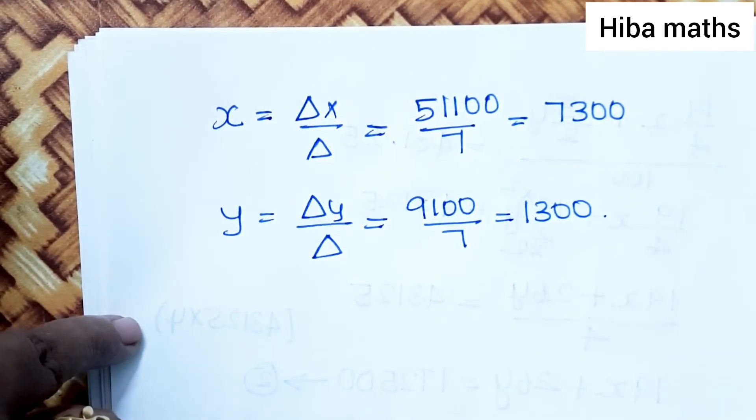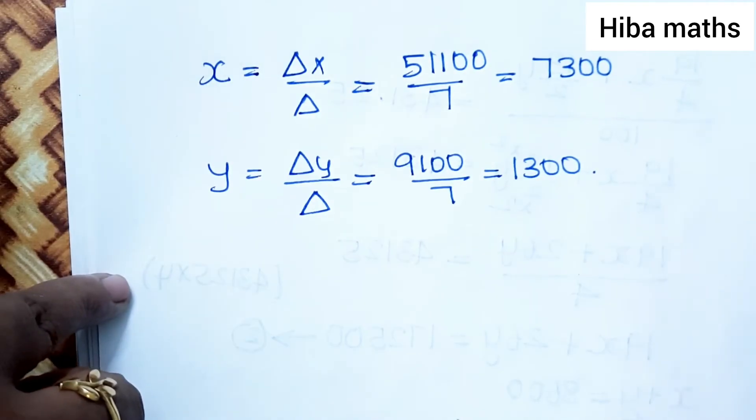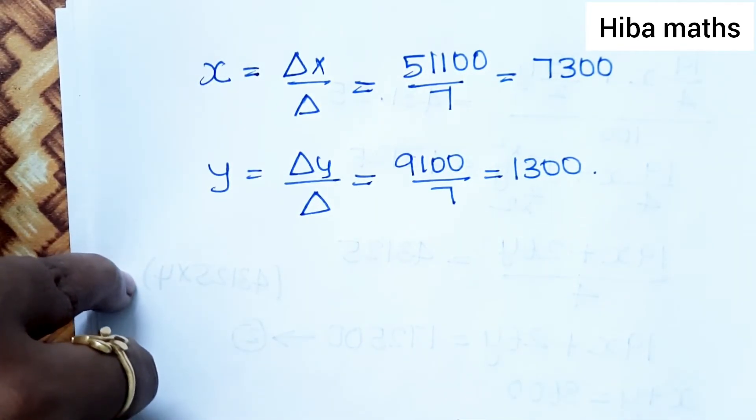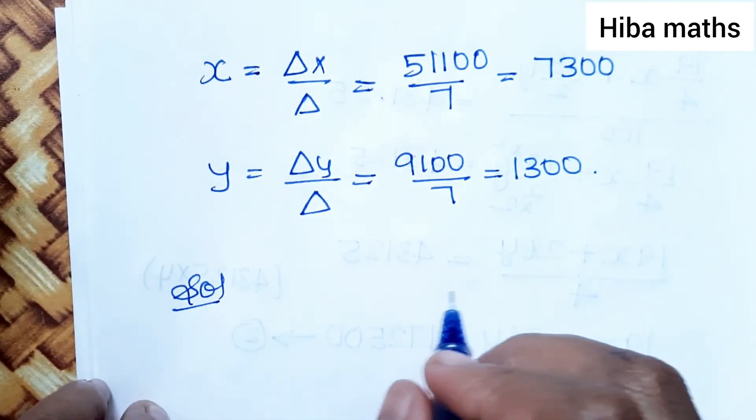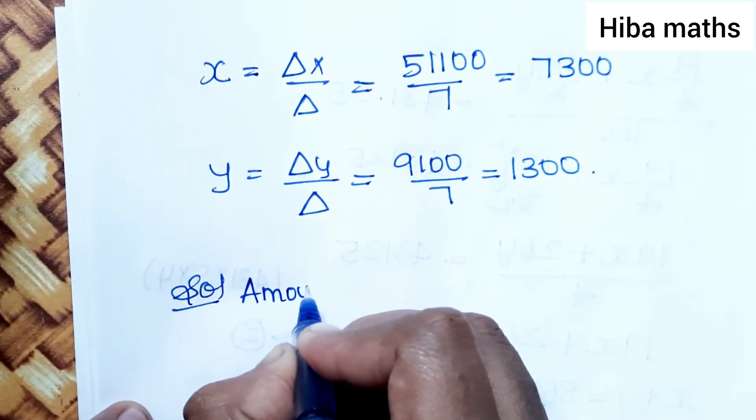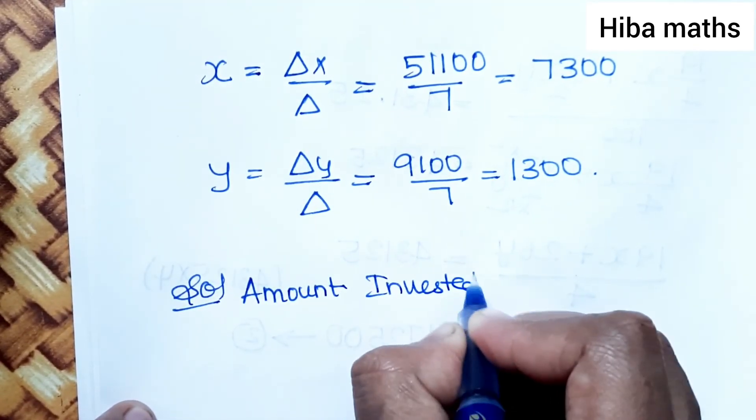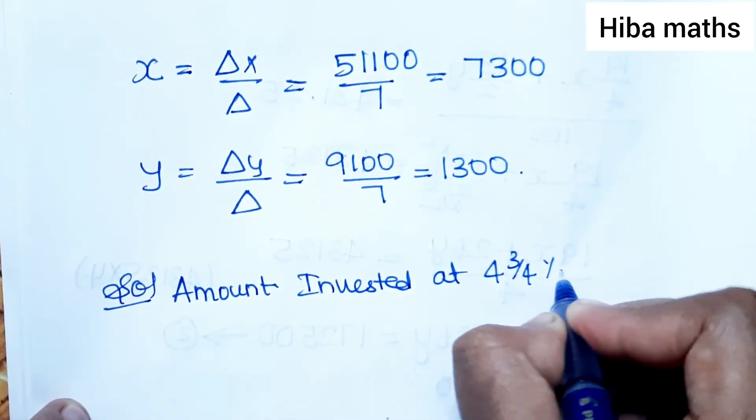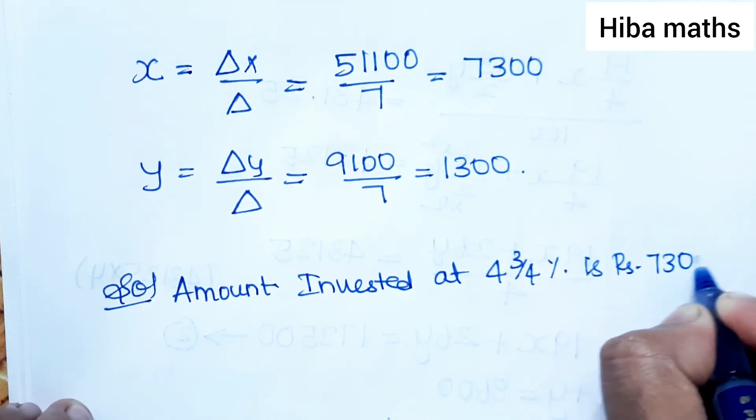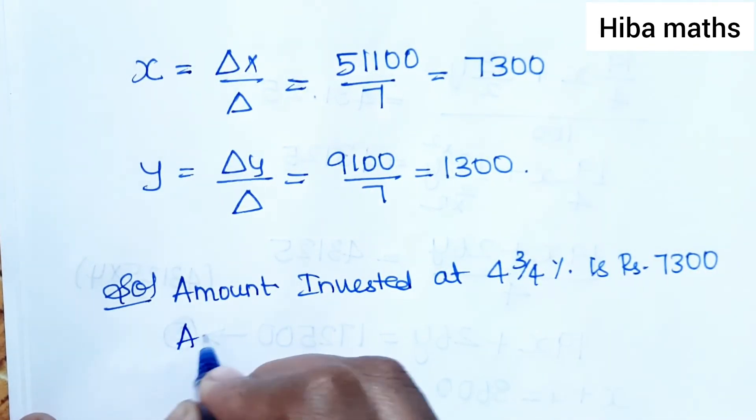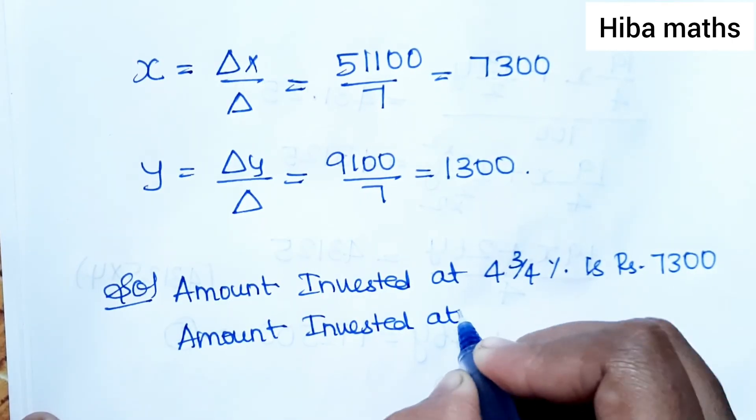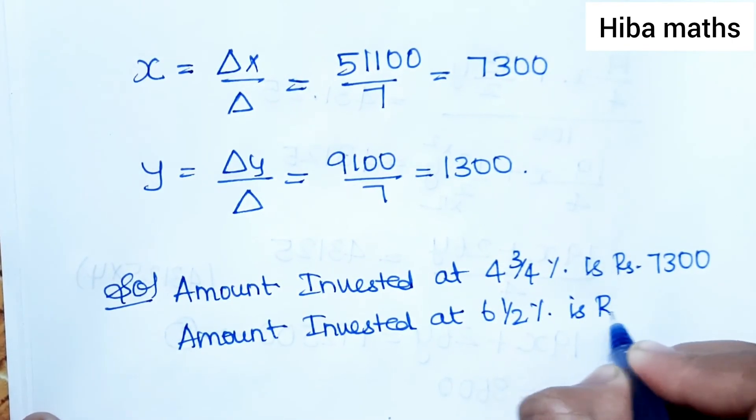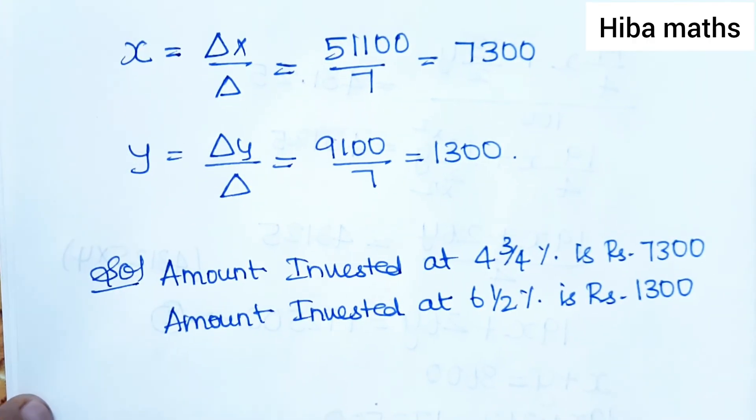So we have 7,300 and 1,300. You can verify by adding them and checking if the answer matches. I will write the complete solution in the description. If you have any doubts, please comment in the comment section. Thank you so much for watching.